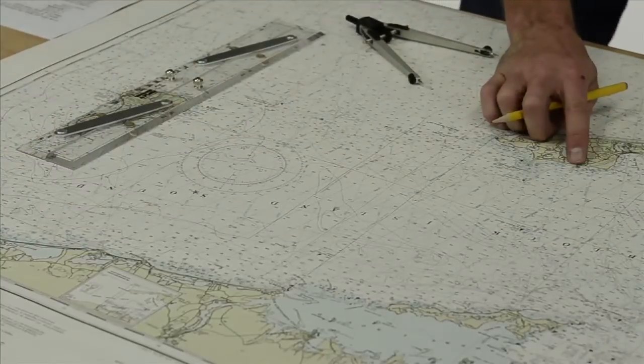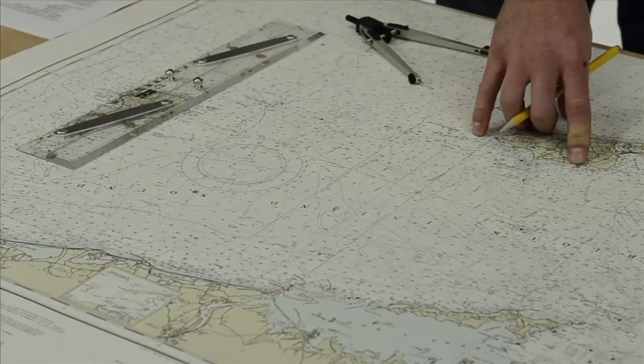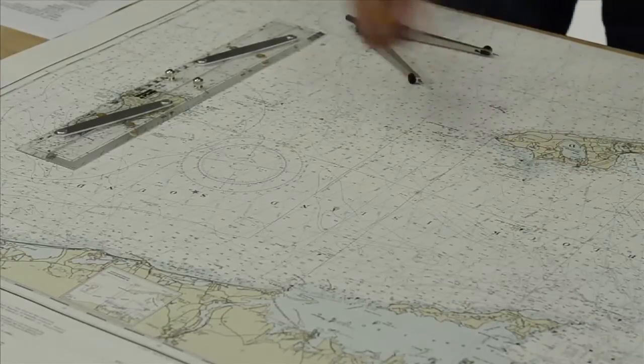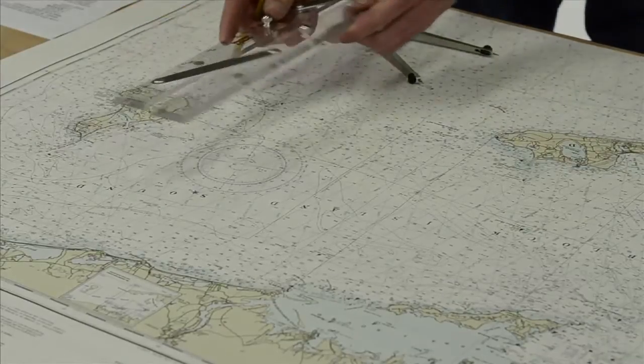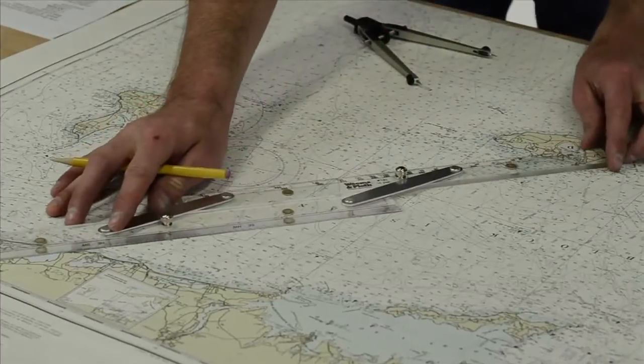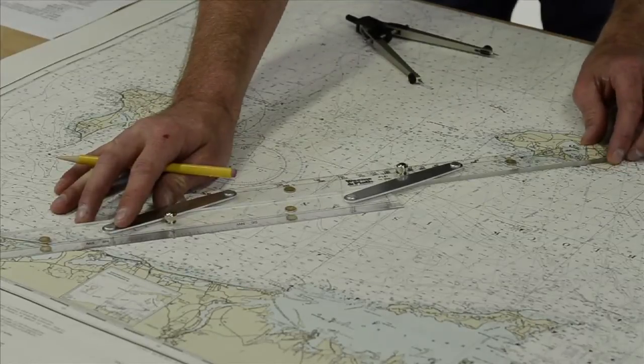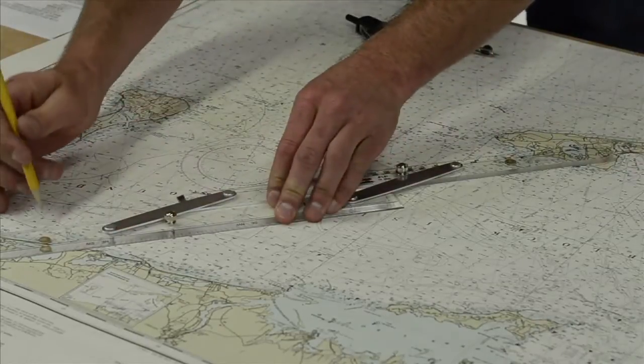Our starting point is Lake Montauk. To calculate speed we need distance divided by time. This is how we get our distance. Spread the parallel rules out because it's long. We go from the end to the start. We need to make a straight line here so we have something to measure.